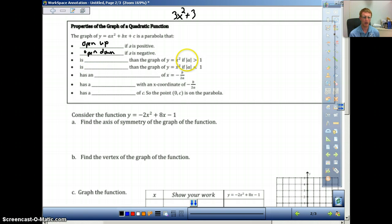We know that comparing it, and this is just a principle that we didn't really get into a lot of detail of, but we know that if the absolute value of a, or if that number a, regardless of whether it's negative or positive, if it's greater than 1, it's going to be skinnier than a normal x-squared graph. And if it's less than 1, like a fraction or a decimal, it's going to be wider than a regular x-squared graph.